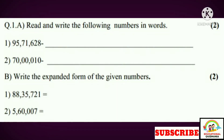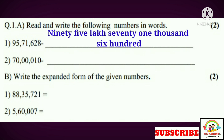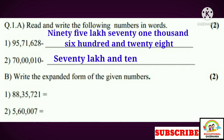Question number one, part A: Read and write the following numbers in words. One: the answer is ninety-five lakh seventy-one thousand six hundred and twenty-eight. Two: seventy lakh and ten.